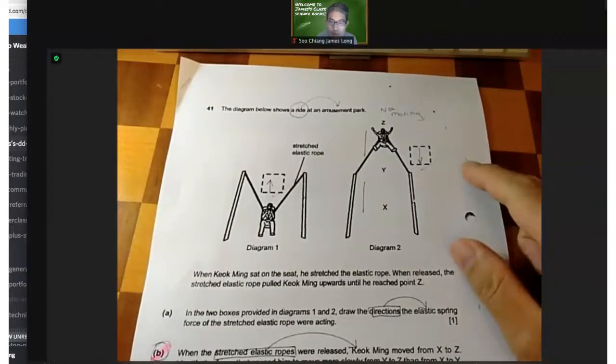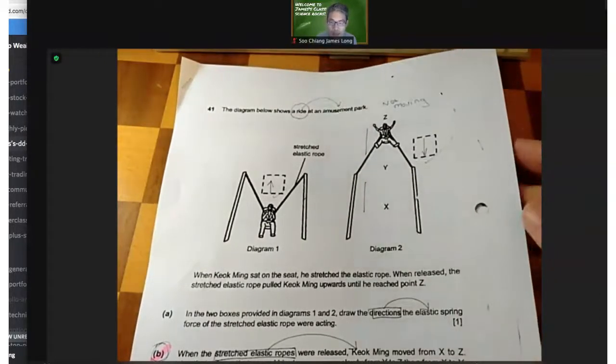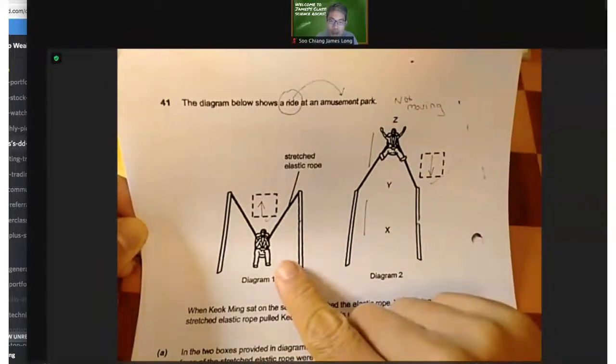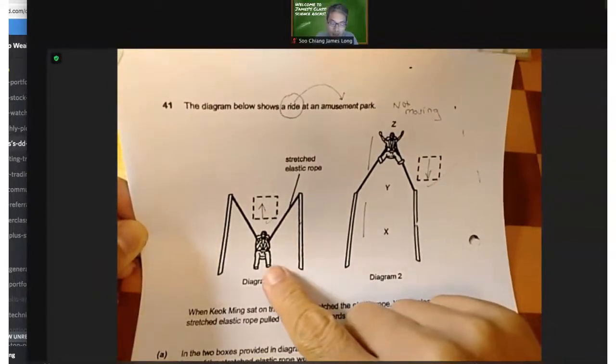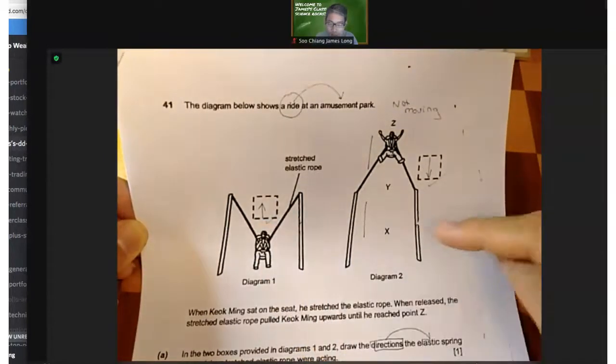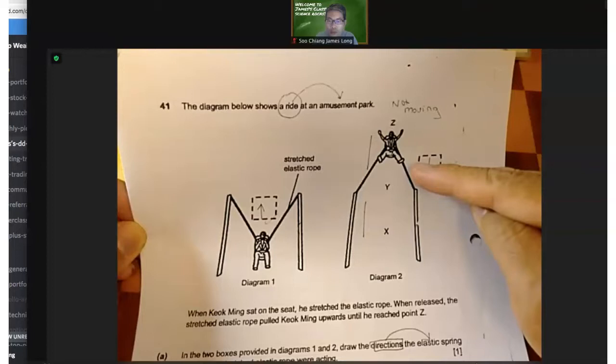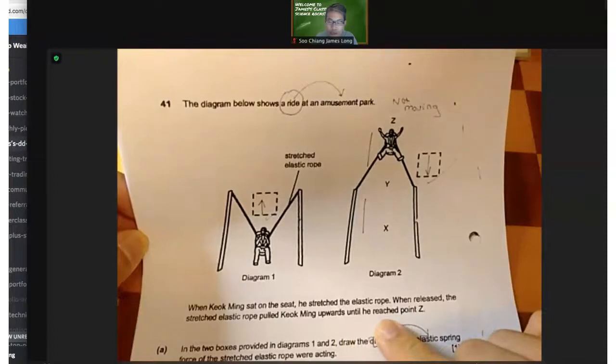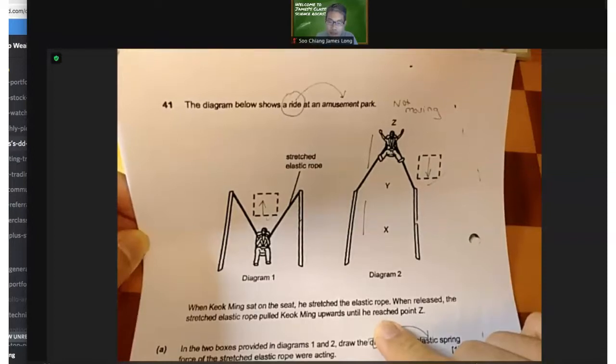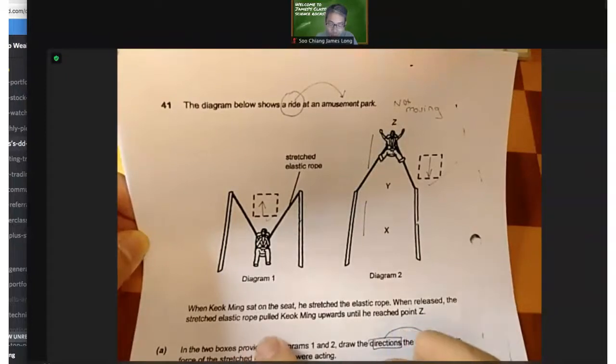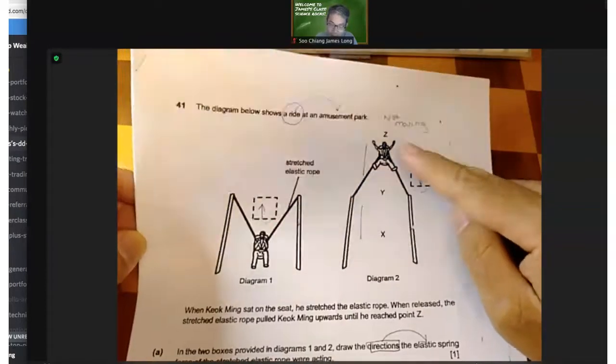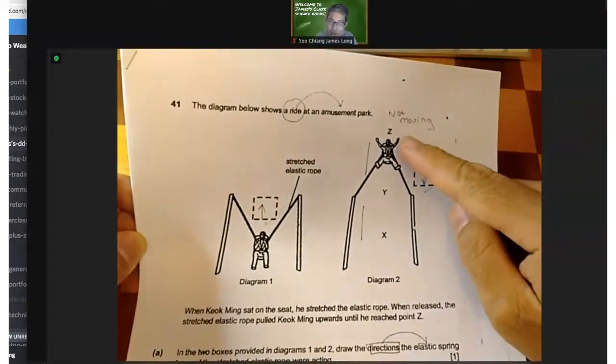I already discussed these questions before in one of the earlier videos, but I will go through again. In this case, this person was on a stretched elastic rope, and when he is let go, he will actually spring upwards still attached to the seat. As he goes up, he will stretch this elastic rope just like stretching a rubber band. The more you stretch it, the harder it is to stretch it further.